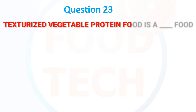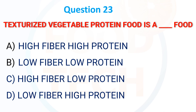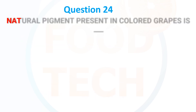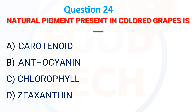Texturized Vegetable Protein (TVP) is: A) High Fiber High Protein, B) Low Fiber Low Protein, C) High Fiber Low Protein, D) Low Fiber High Protein. The answer is A) High Fiber High Protein.